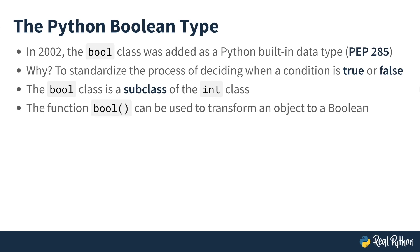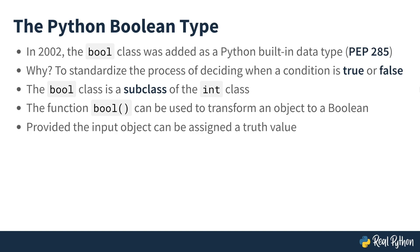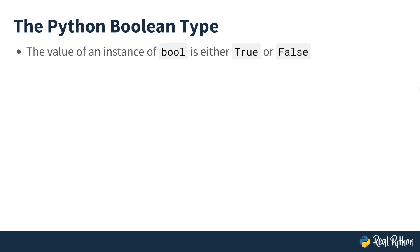The constructor function to the Boolean class is called bool, and bool can therefore be used to transform an object to a Boolean data type. Unless the object you're trying to transform is a Python built-in object, your class has to define a way to transform the object into a Boolean type — we'll discuss this in a future lesson. There are only two possible values of an instance of the Boolean data type: either true or false. True and false are also keywords, which means you can't use them as variable names or identifier names in your programs.